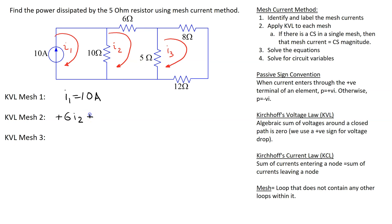So, this voltage drop is plus 5 I2 minus I3.